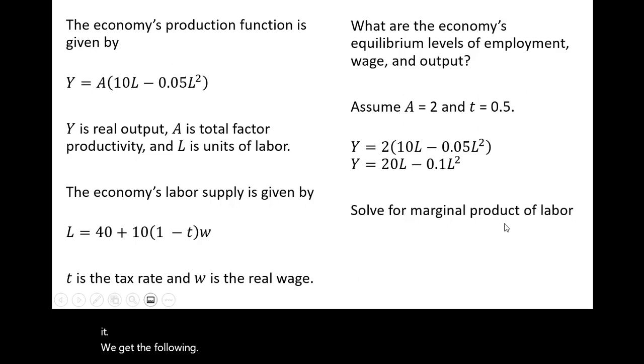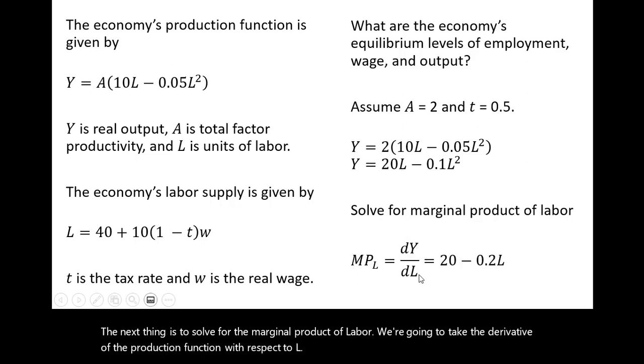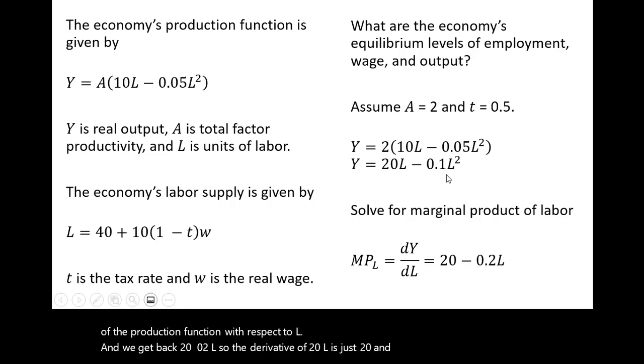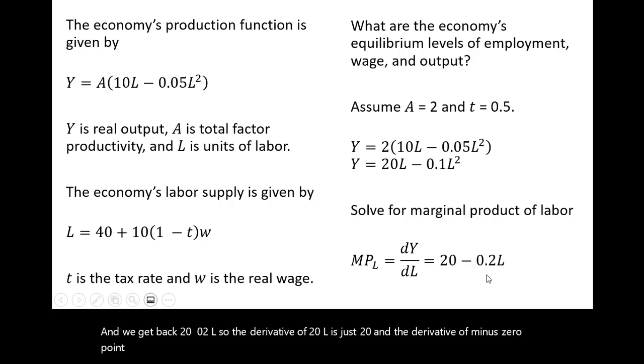The next thing is to solve for the marginal product of labor. We're going to take the derivative of the production function with respect to L, and we get back 20 minus 0.2L. So the derivative of 20L is just 20, and the derivative of minus 0.1L squared is minus 0.2L. This exponent here, this 2, that comes down in front, and then we subtract 1 from the exponent, so we're left with, again, minus 0.2L.